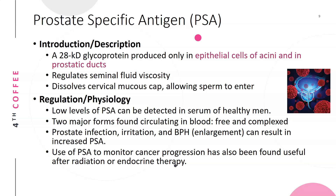PSA, or prostate-specific antigen, is a 28 kilodalton glycoprotein produced only in the epithelial cells of the acini and prostatic ducts. It regulates seminal fluid viscosity and dissolves the cervical mucus cap to allow sperm entry. Low levels of PSA can be detected in the serum of healthy men. There are two major forms circulating in the blood: free PSA and complex PSA. Prostate infection, prostate irritation, and BPH (benign prostatic hyperplasia) can result in increased PSA.